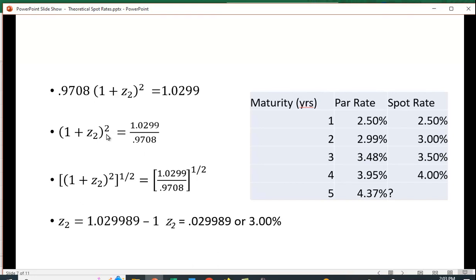I want to get rid of that square, so I can raise this to the 1.5 power. If I raise this side to the 1.5 power, I have to raise this to the 1.5 power, and then I will subtract 1 from this, and I will get 0.029989, or 3%, which is in fact what we've been given. Let's do one more to make sure we're doing this correctly.